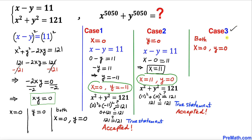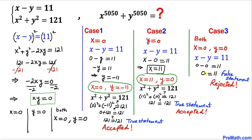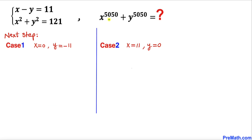Case 3: when both x and y equal 0. Plugging into equation 1 gives 0 minus 0 equals 11, so 0 equals 11. The left hand side is not equal to the right hand side, so this is a false statement. We reject this scenario.